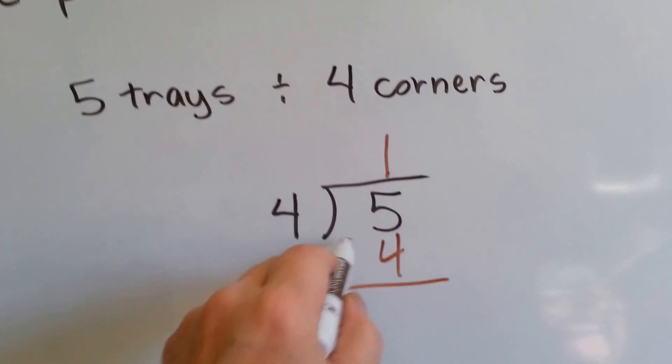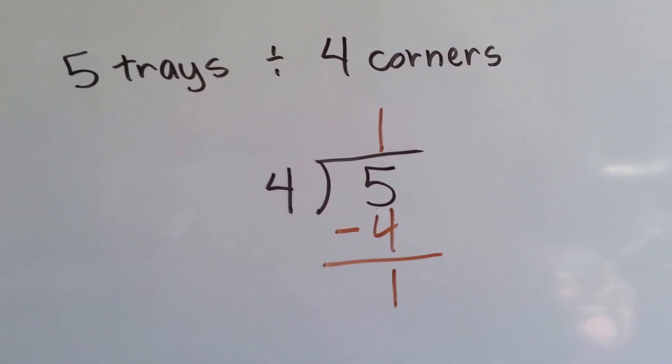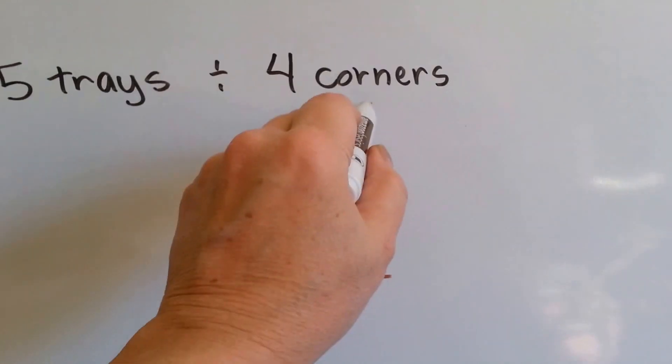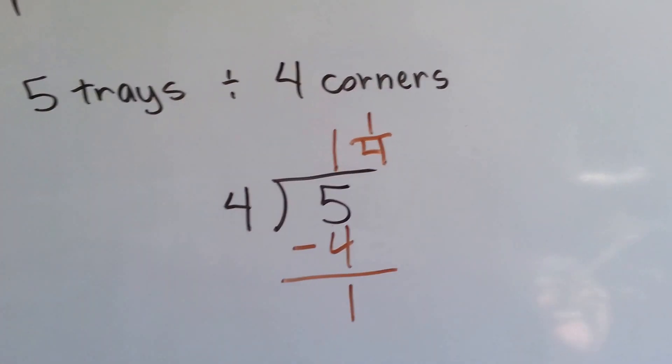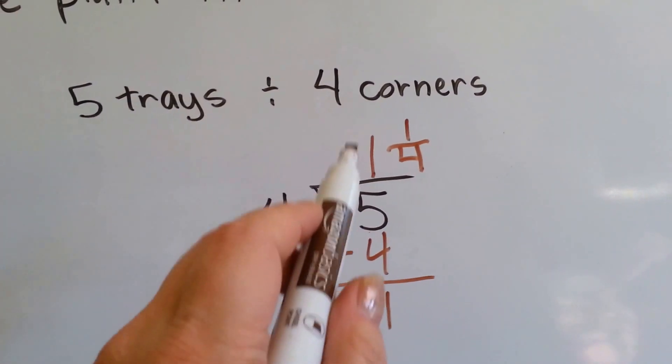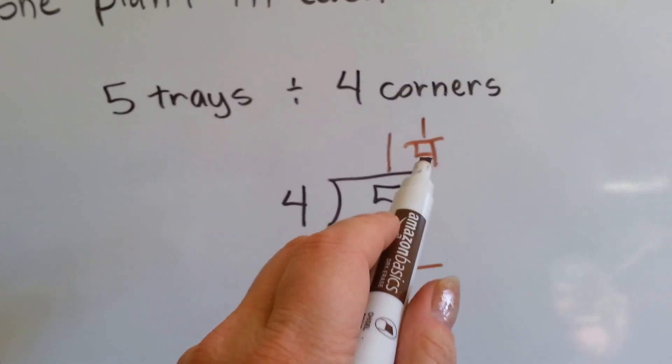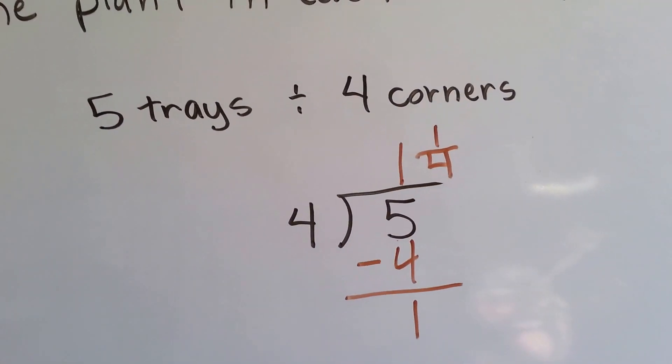And four times one is four. We do our subtraction and we get one left over. We put the one on top of the four and we know that she can put one and one fourth trays of flowers in each corner.